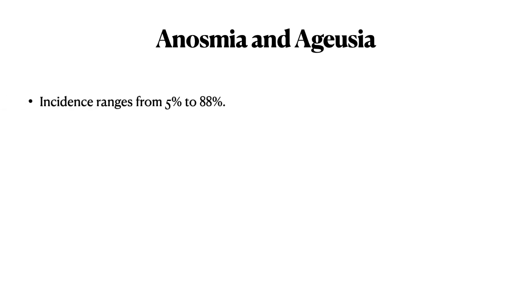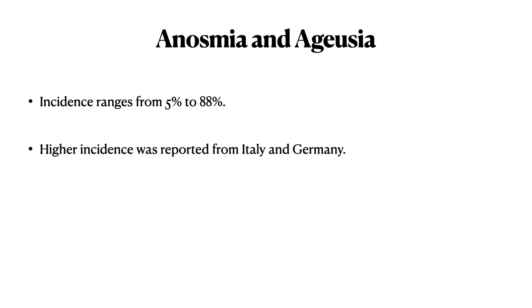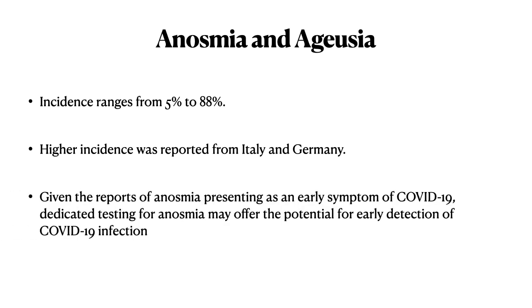The next common presentation is anosmia and ageusia. The incidence ranges from 5% to 88%, but more recent papers from Italy and Germany report incidence as high as 80% to 90%. Given that anosmia presents as an early symptom of COVID-19, dedicated testing for anosmia may offer a potential early detection method for this infection.